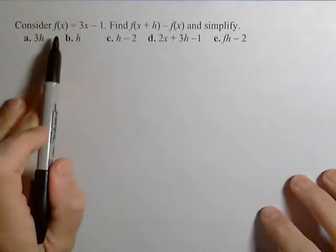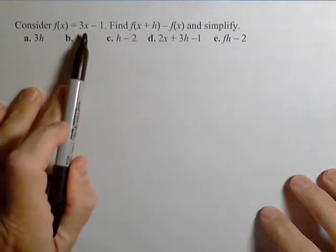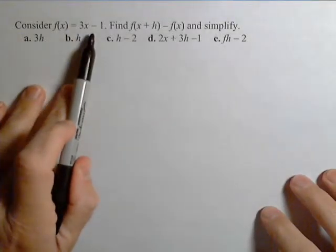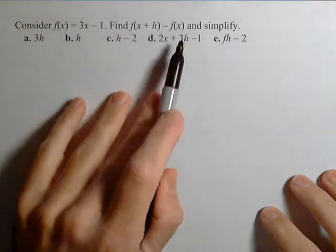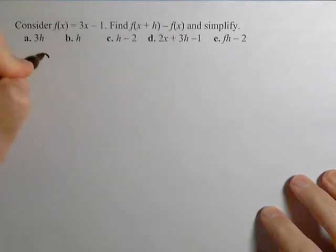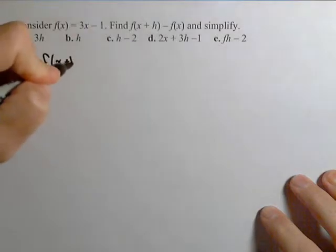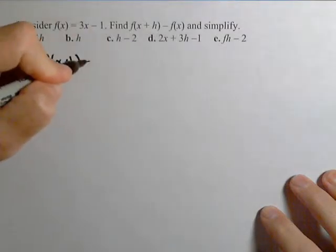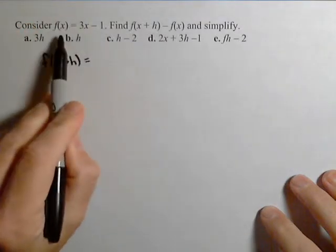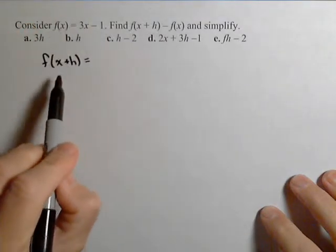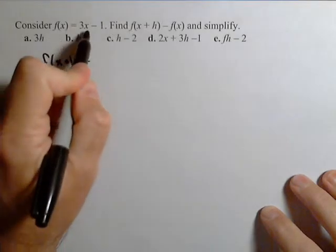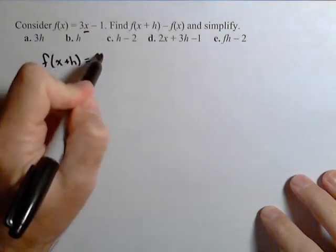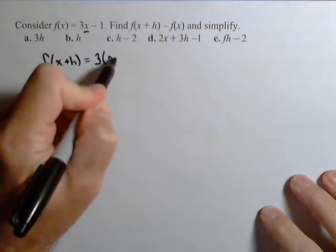In this problem, we're given f of x is equal to 3x minus 1, and we want to find f of x plus h minus f of x. First, it's important to talk about what f of x plus h looks like — that's our function f of x with x plus h plugged in for x. So any place there's an x, I need to replace it with x plus h.